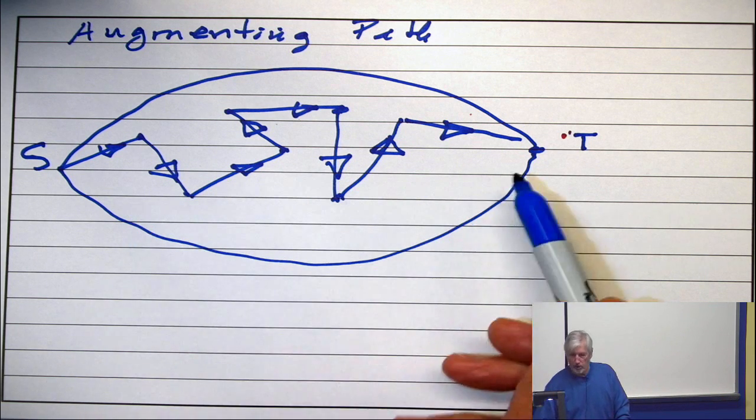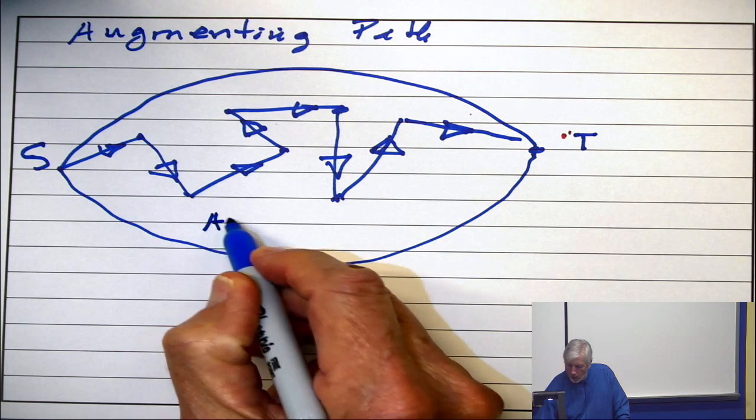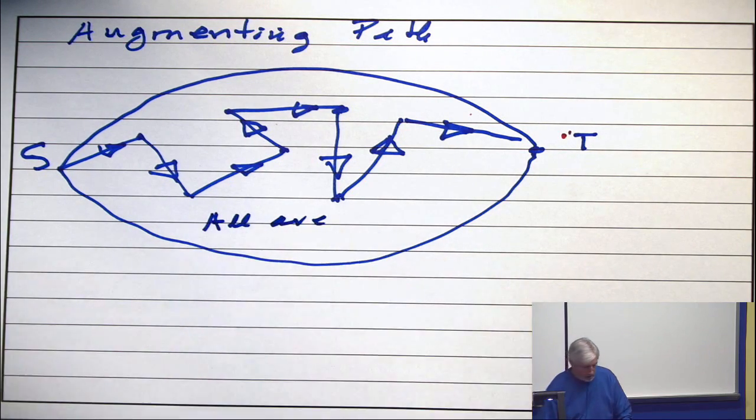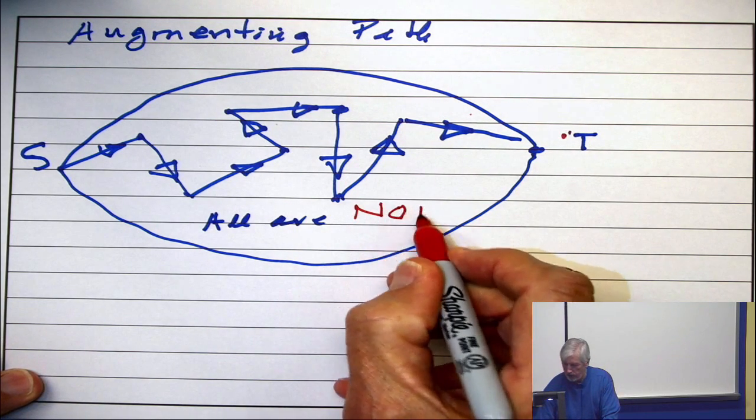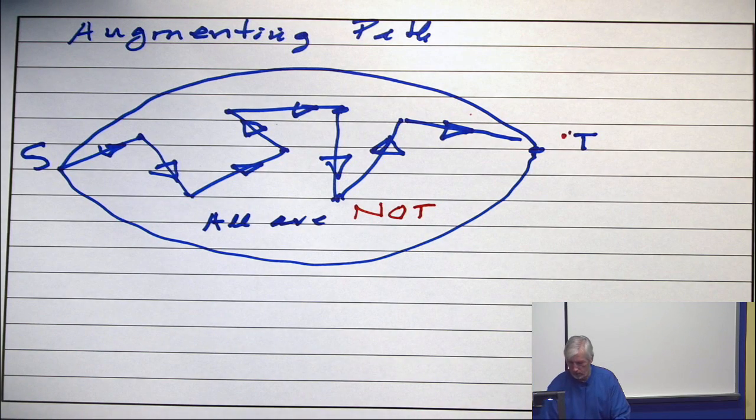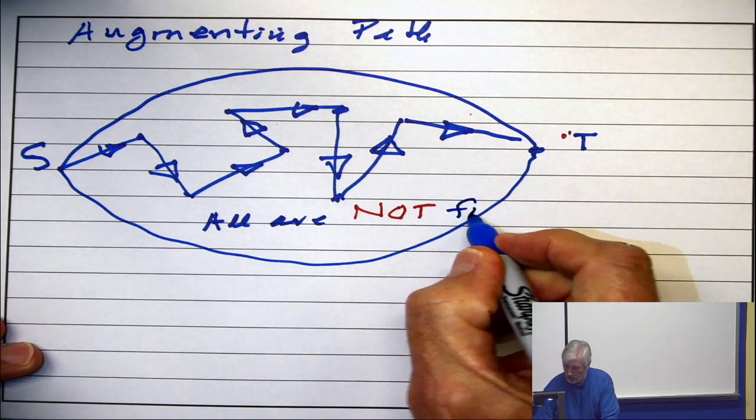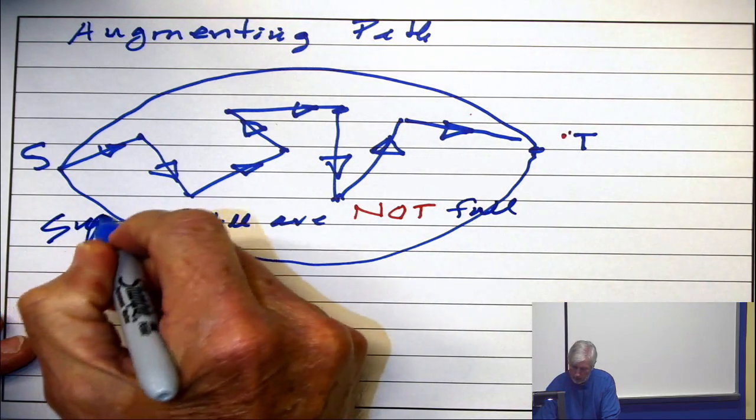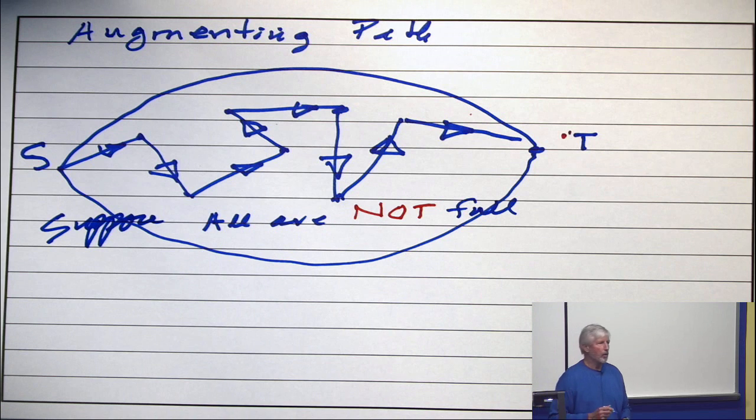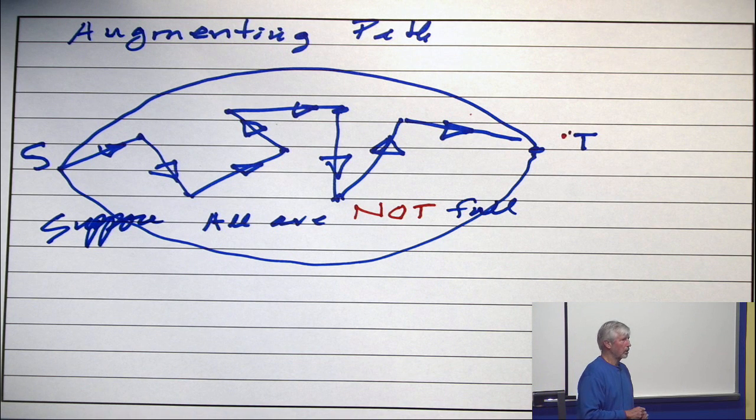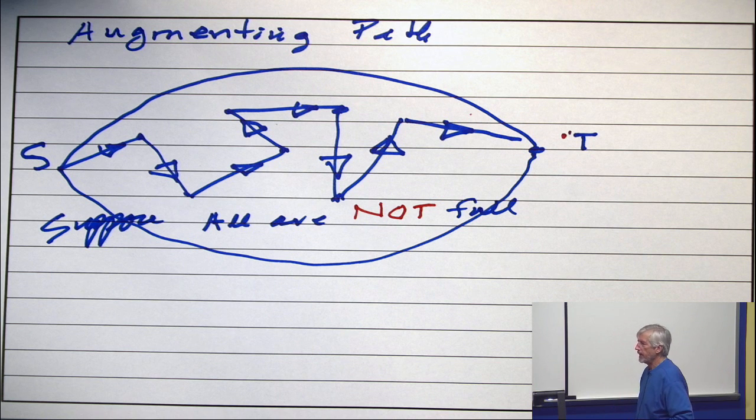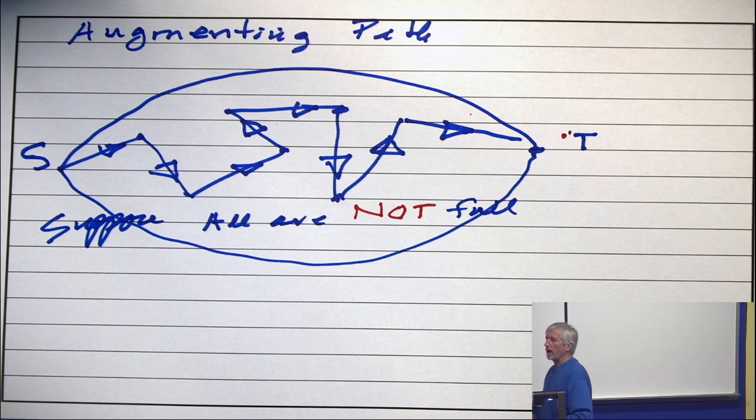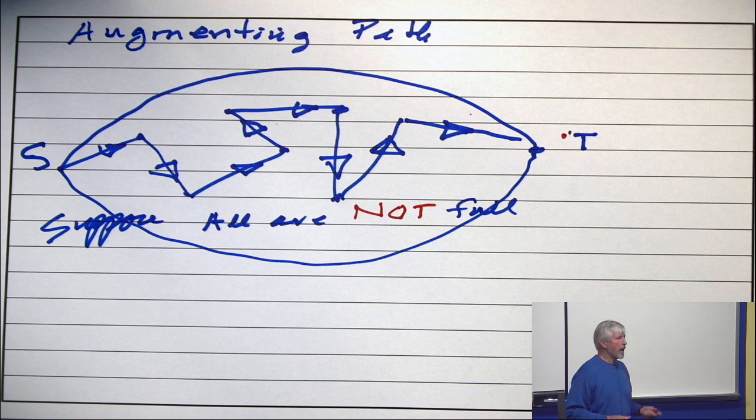All right. Now, look at those edges. Suppose all are not full. Just suppose. So, let me write suppose all of them are not full. Can you change this flow in a way that increases the value? And how would you do that?